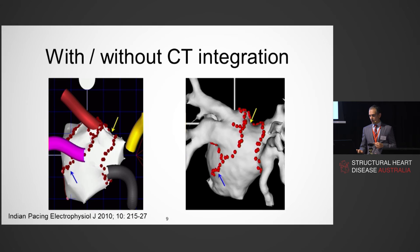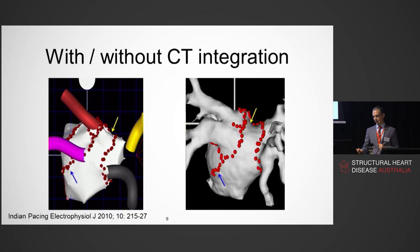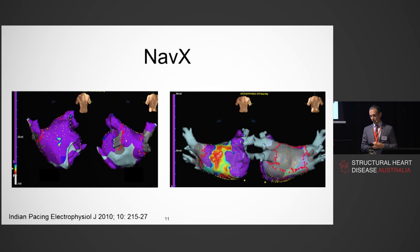On older CARTO versions, the left atrial reconstruction was rudimentary compared to actual CT data. We used to create images point by point, rendering a 3D structure and plotting ablation sites. Comparing that to the actual CT data, the difference is clear. In a more modern version, even a basic table map integrated with CT yields a very sophisticated image. Current versions of both dominant systems are so good they provide near-lifelike representation even without CT.